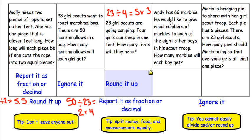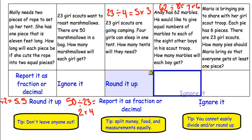Andy has 62 marbles. He would like to give equal numbers of marbles to each of the 8 other boys in his scout troop. How many marbles will each boy get? 62 divided by 8 boys equals 7 remainder 6. So each boy is going to get 7 marbles, but then there are 6 left. Since we can't evenly give out the 6 marbles, this is a case where we would need to ignore the remainder. We are just going to leave those last 6 marbles alone — they will not be split up among the other people.